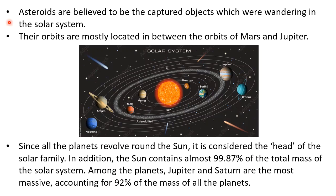Other members of our solar system are asteroids. These are believed to be captured objects which were randomly wandering in the solar system. Once they came into the gravitational field of our Sun, they got captured, and their orbits are mostly located in between the orbits of Mars and Jupiter.